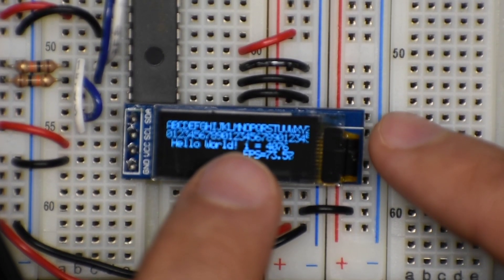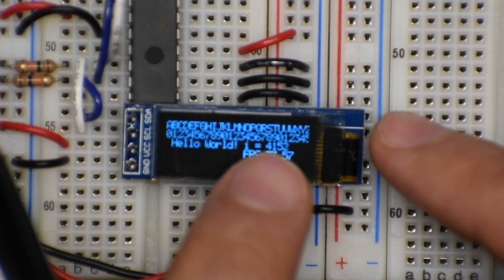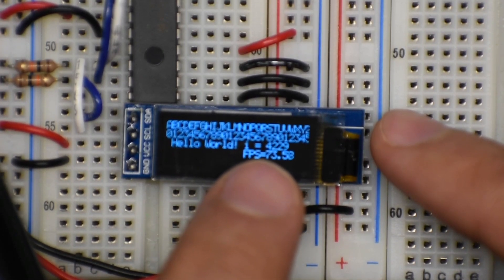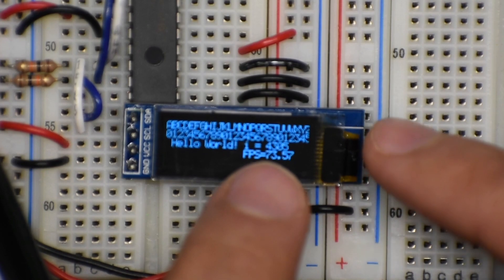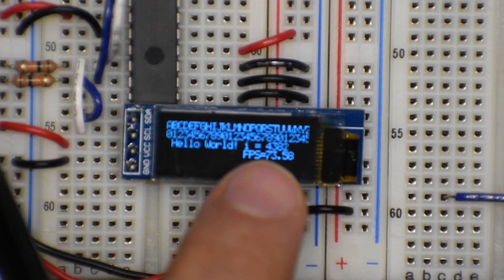Then I'm printing the value of the variable i equals and then it's incrementing and the speed at which it's incrementing is as fast as it possibly can. In this case 73 frames per second.